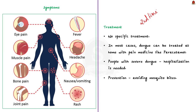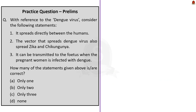People with severe symptoms should get care right away. There is no specific treatment for dengue. However, in most cases dengue fever can be treated at home with pain medicine — paracetamol is most often used to control pain. In the case of people with severe dengue, hospitalization is often needed. Preventing mosquito bites is the best way to avoid getting dengue. To summarize, we briefly saw about dengue, its causative agent, how it transmits, the symptoms, and finally the treatment.